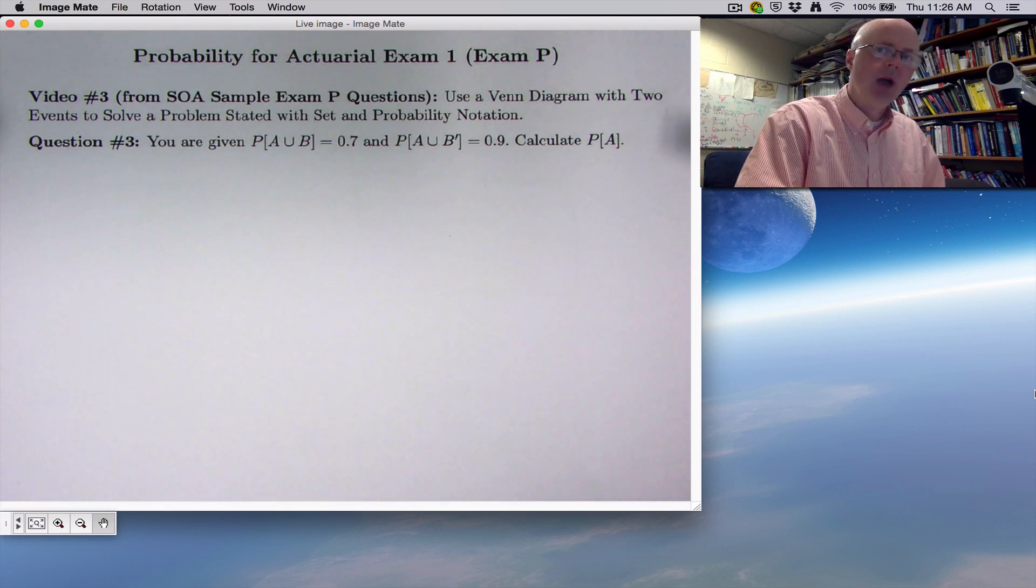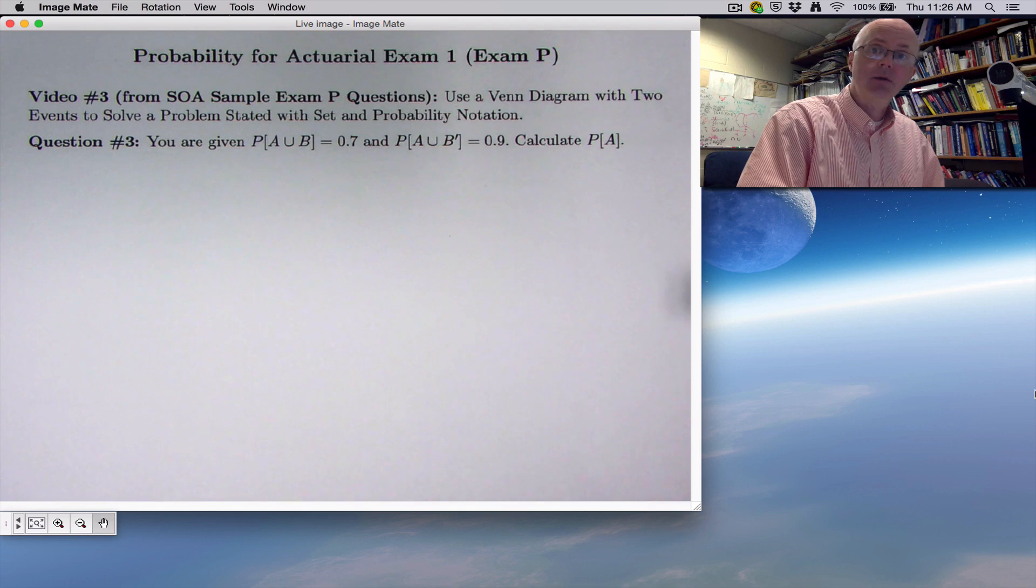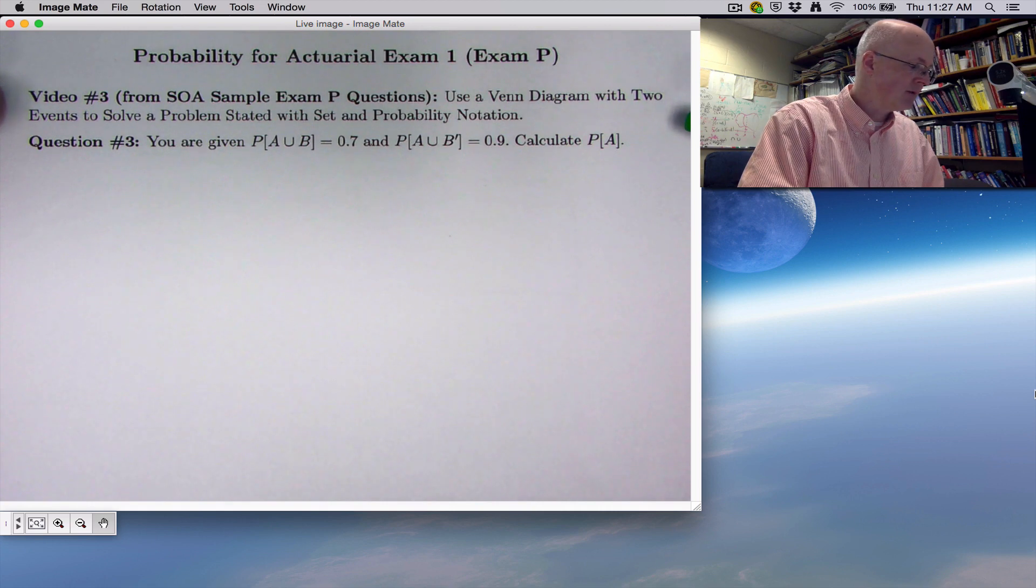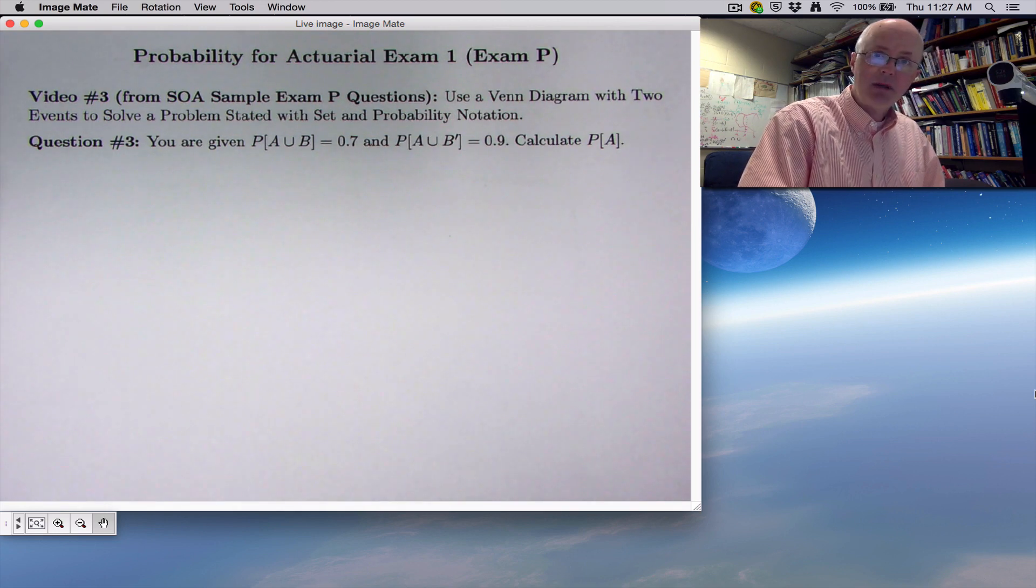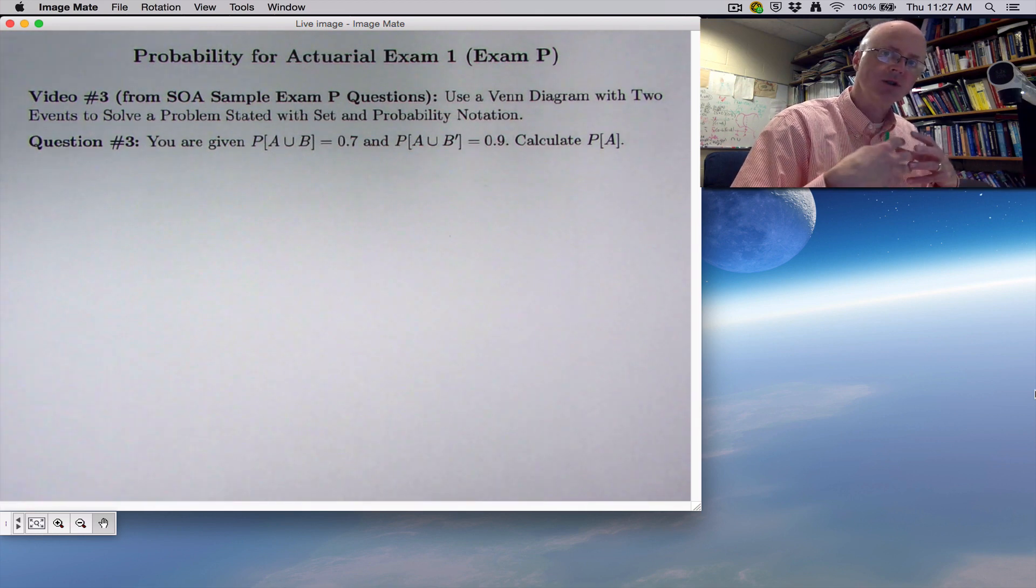So, that does show up on actuarial exam one. We need to be able to understand how to deal with such symbolism. The question can be described as using a Venn diagram with two events here, A and B, to solve this problem that is stated purely with set notation and probability notation. Sets or events are what A and B represent. Sets are collections of things, events are things that can happen. You can merge the two ideas.